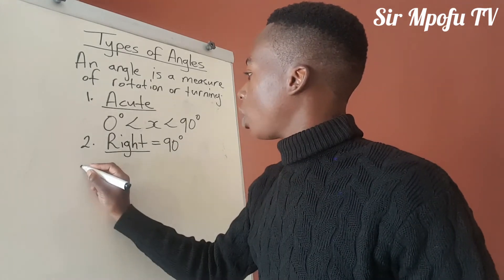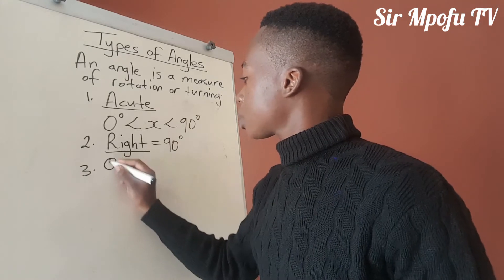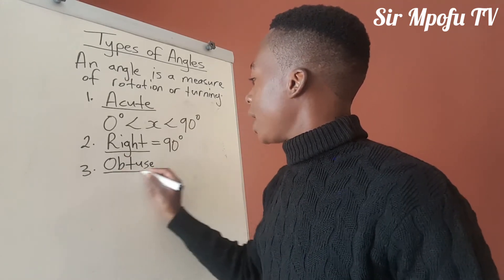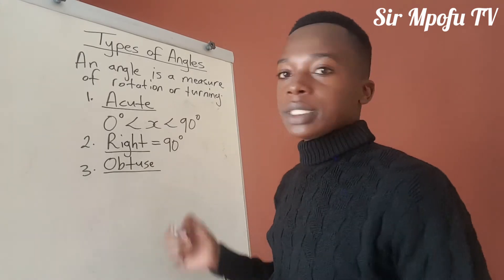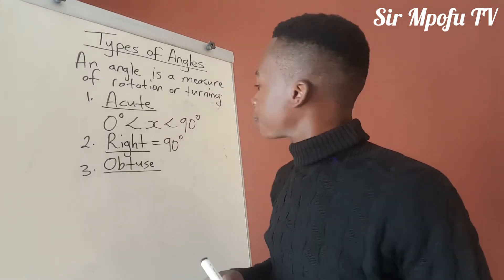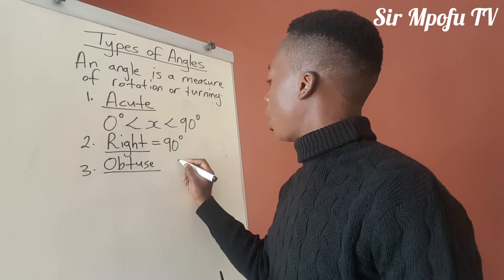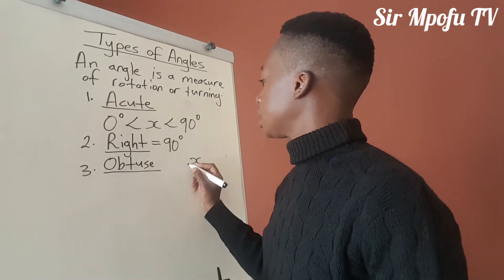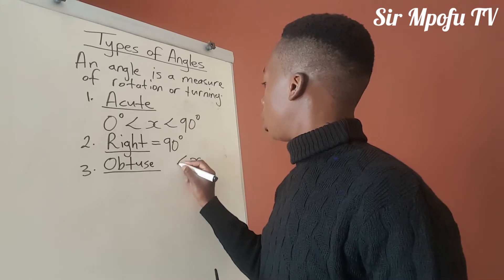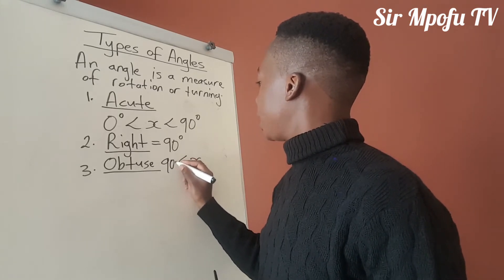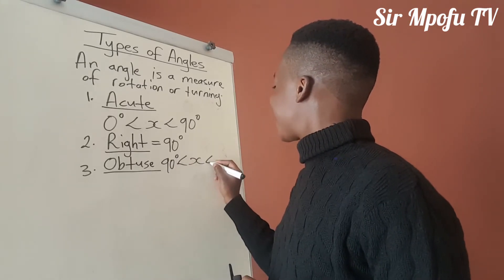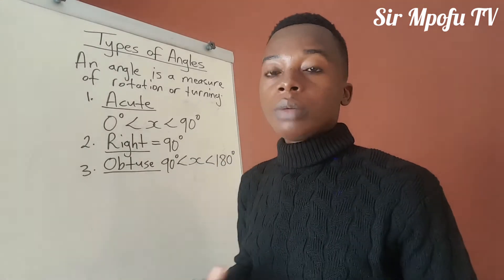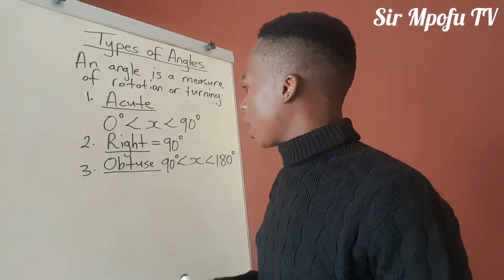Then we have got the obtuse angle. I'm going to write it in front — I hope that it will be clear. I'm going to use X to represent the obtuse angle. It will be more than 90 degrees but less than 180 degrees. That is what you call an obtuse angle.